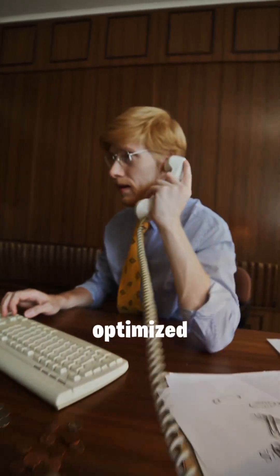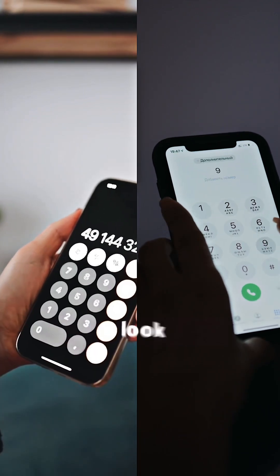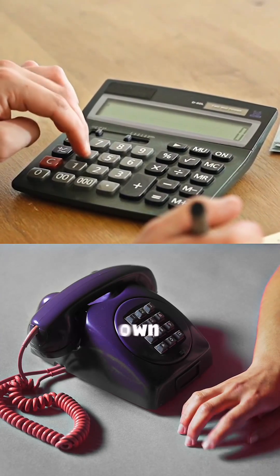This change wasn't about making things harder, but about creating a system optimized for calling, not calculations. That's why phone keypads and calculators looked so different. Each was built for its own unique purpose.